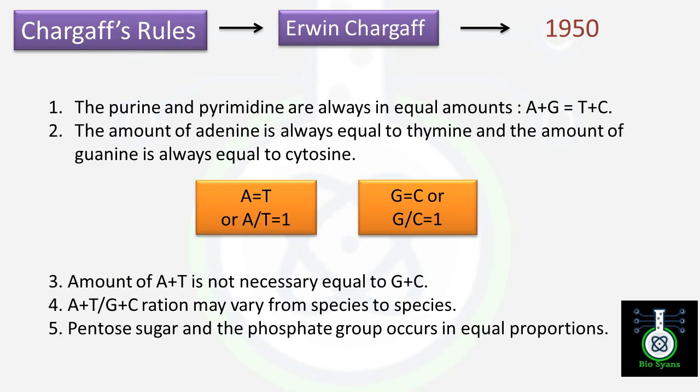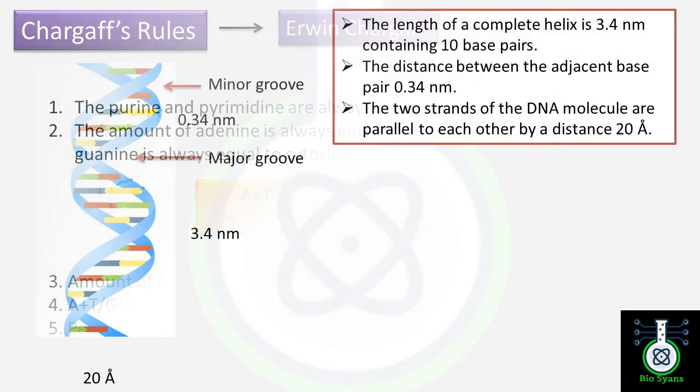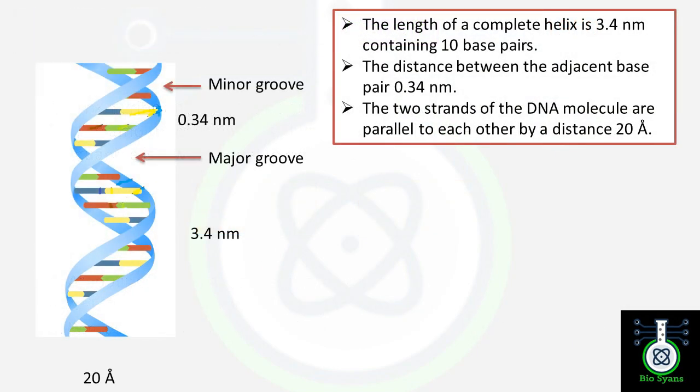The sixth point mentions that the pentose sugar and the phosphate group occur in equal proportions. Now let's talk about the helical configuration of DNA. The polynucleotide chain shows polarity. One end of each DNA strand called 5 prime end signifies the free carbon atom at the fifth position, and the 3 prime end signifies the free carbon atom at the third position.